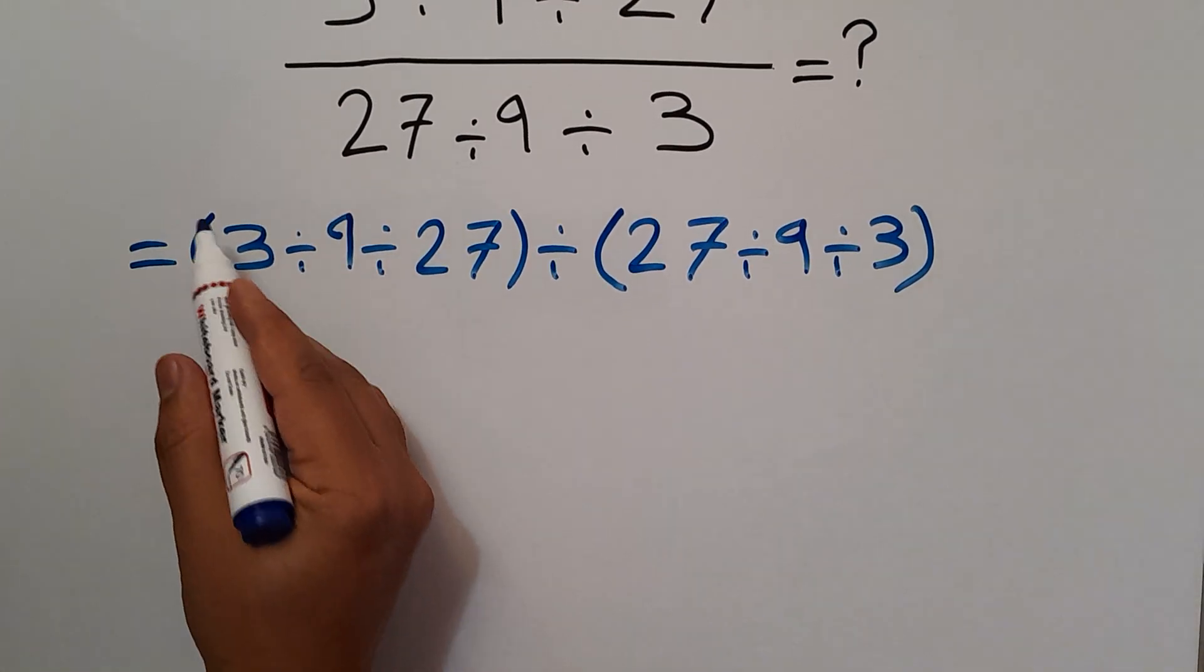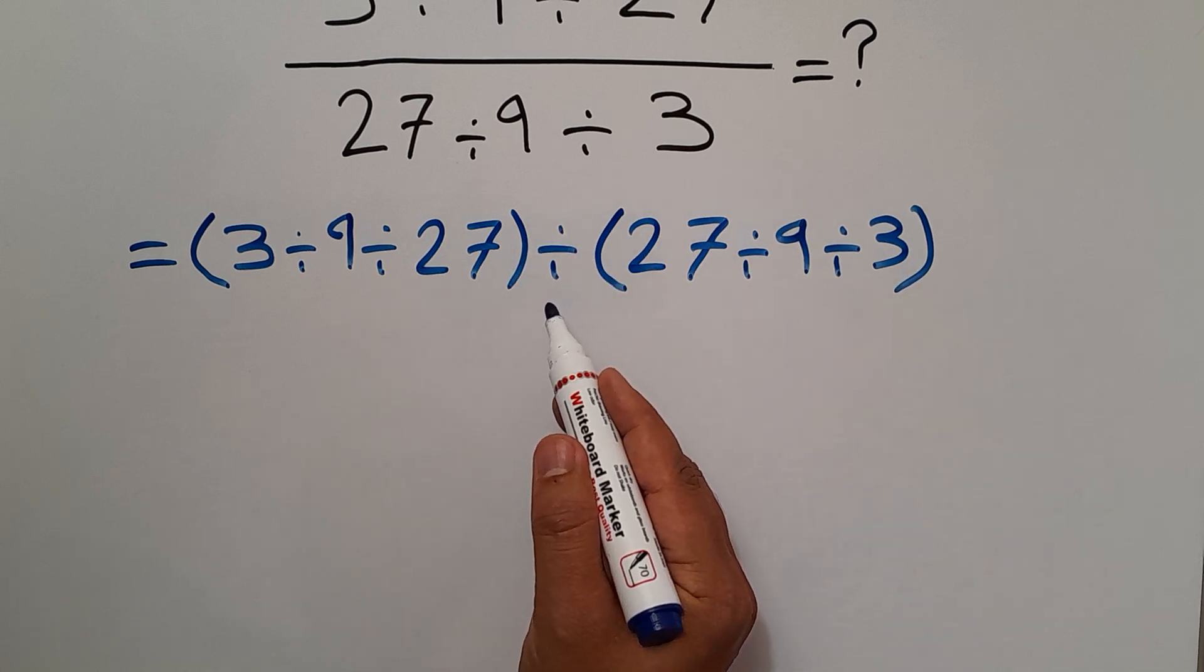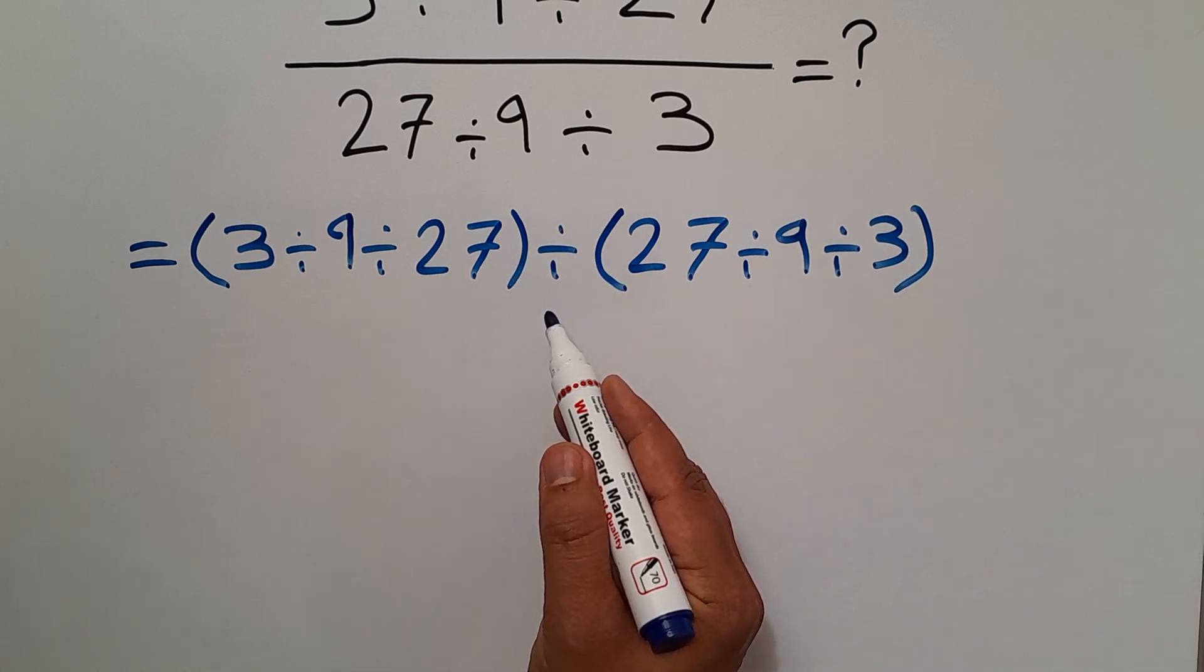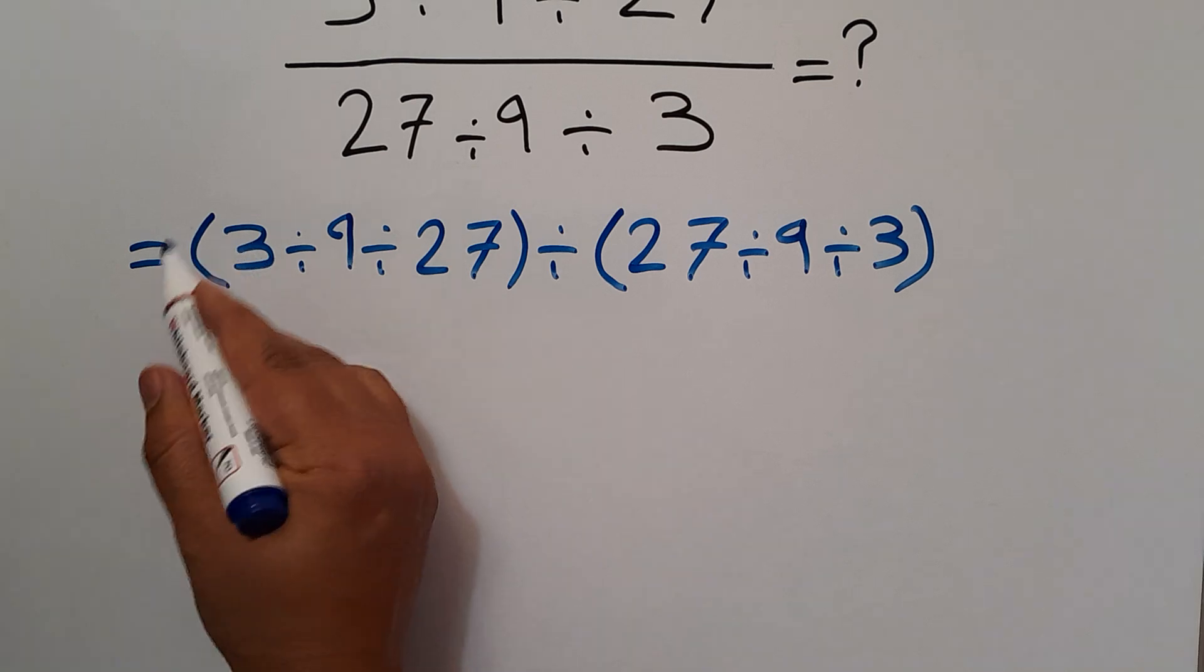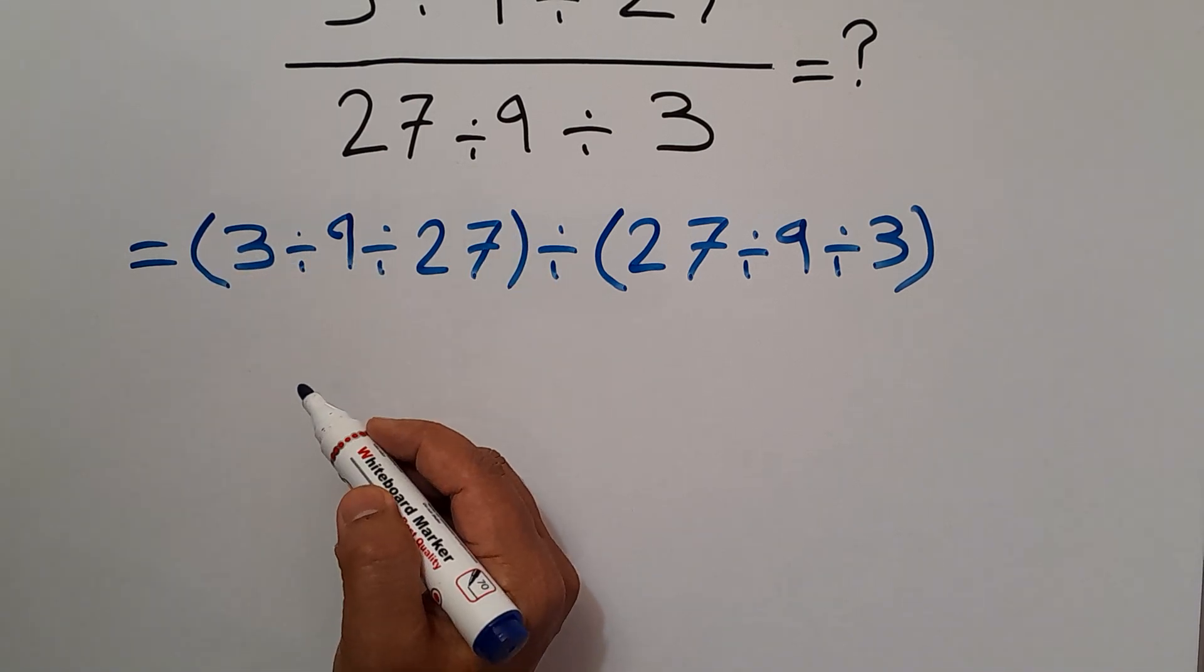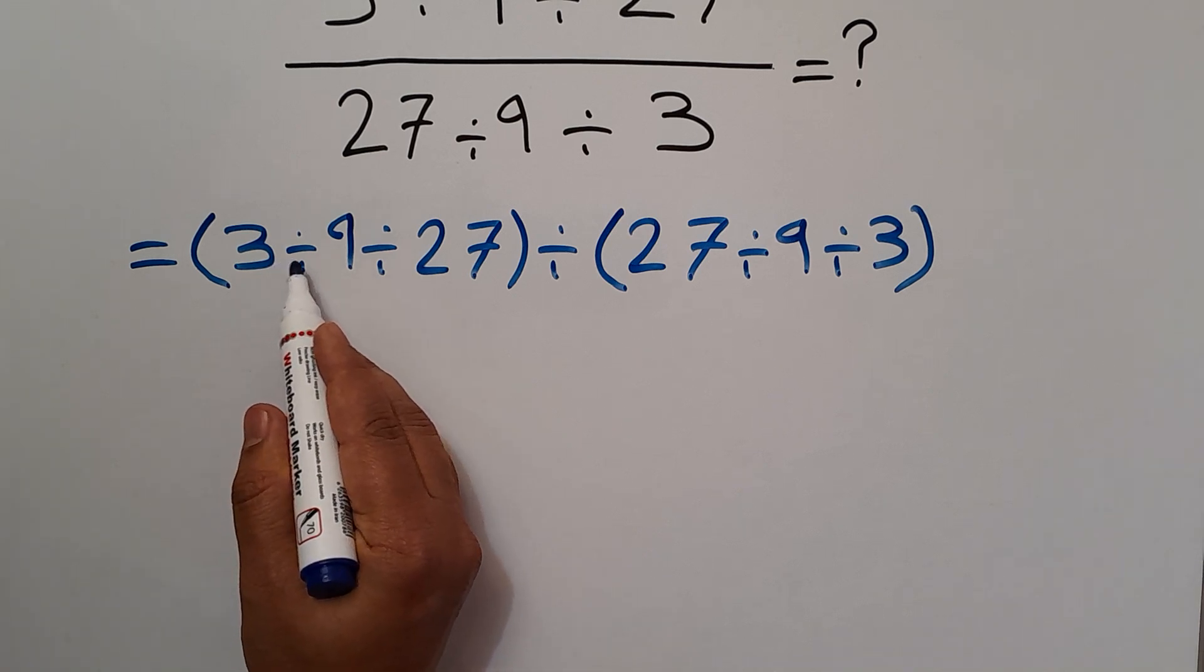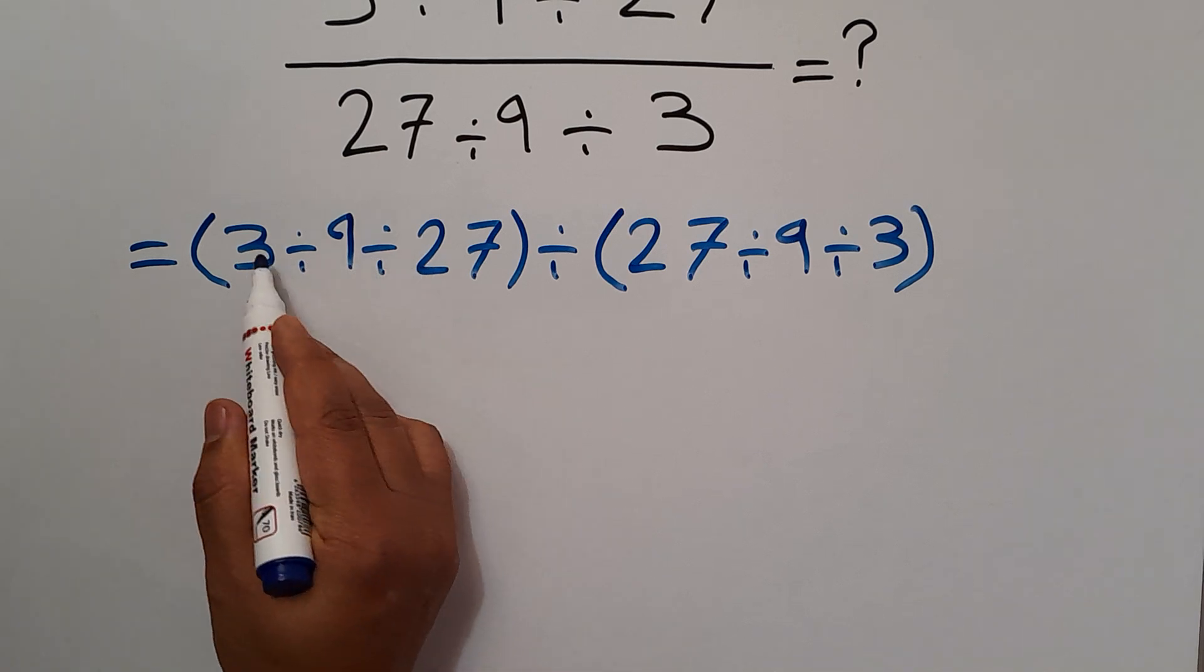And now we have two parentheses and one division. As we know, parentheses has higher priority than other operations. So first we do this parentheses. Inside this parentheses we have two divisions, and when we have more than one division in one expression, we have to go from left to right.